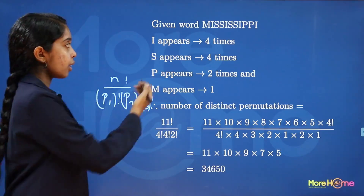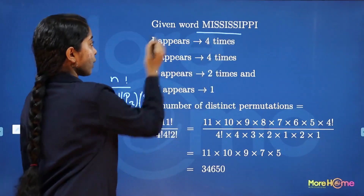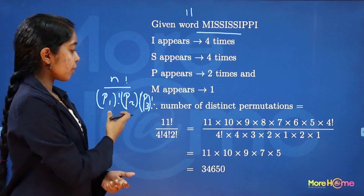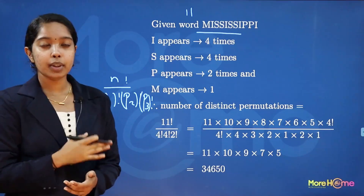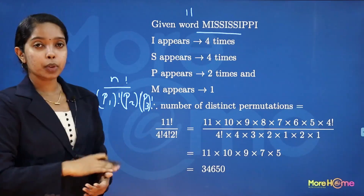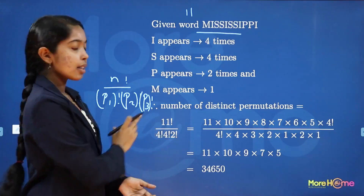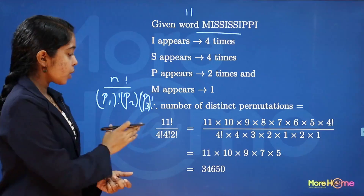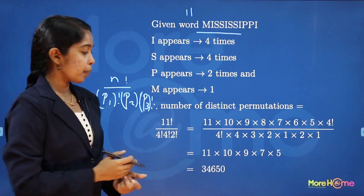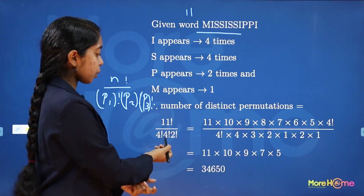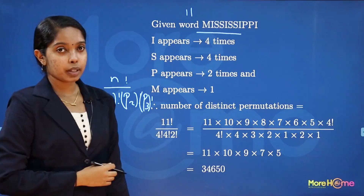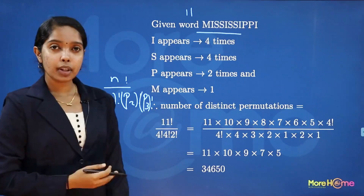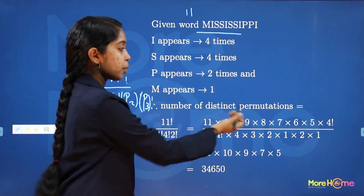The total number of letters in MISSISSIPPI is 11, so N equals 11. The letter I appears 4 times, S appears 4 times, and P appears 2 times, M appears once. So the total number of distinct permutations is 11 factorial divided by 4 factorial into 4 factorial into 2 factorial.